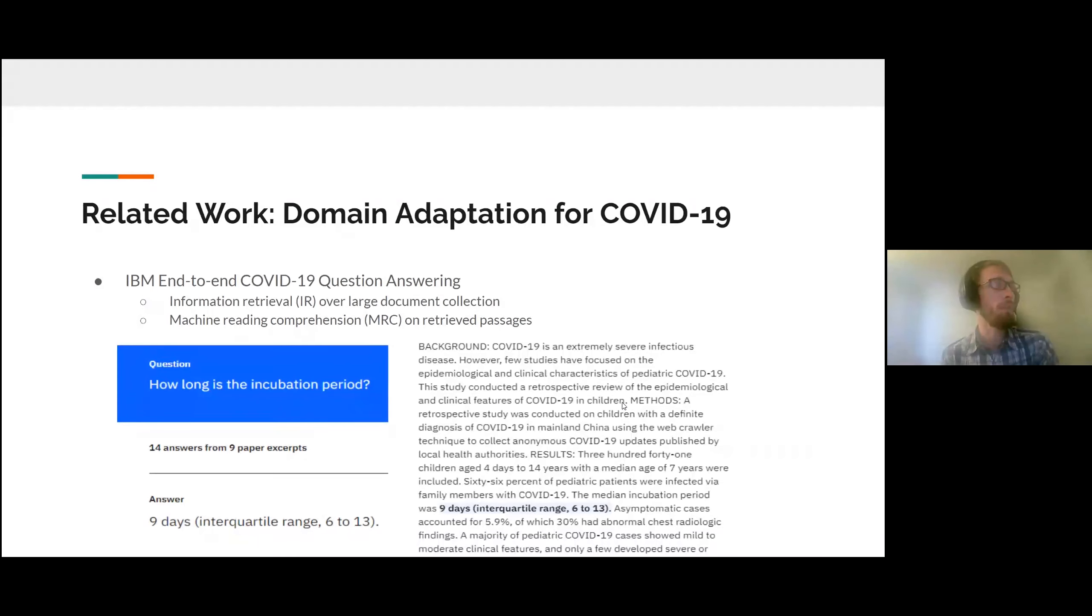First off, IBM developed an end-to-end COVID-19 question answering system with information retrieval and machine reading comprehension. Essentially, you could ask a question and it would populate an answer using a number of different documents. And you can see an example here.